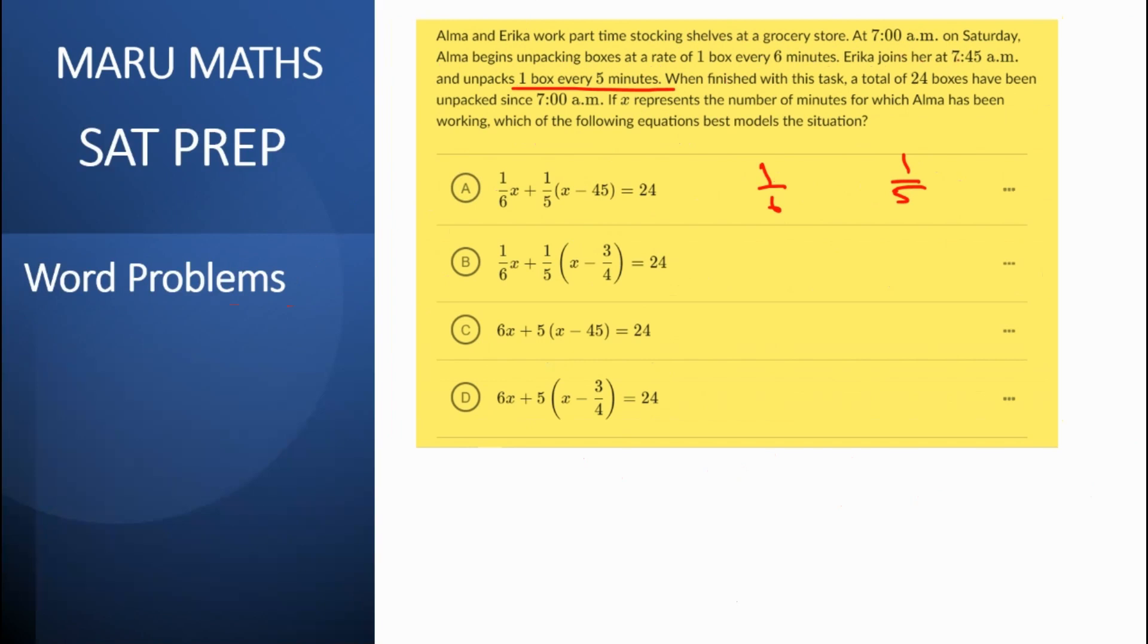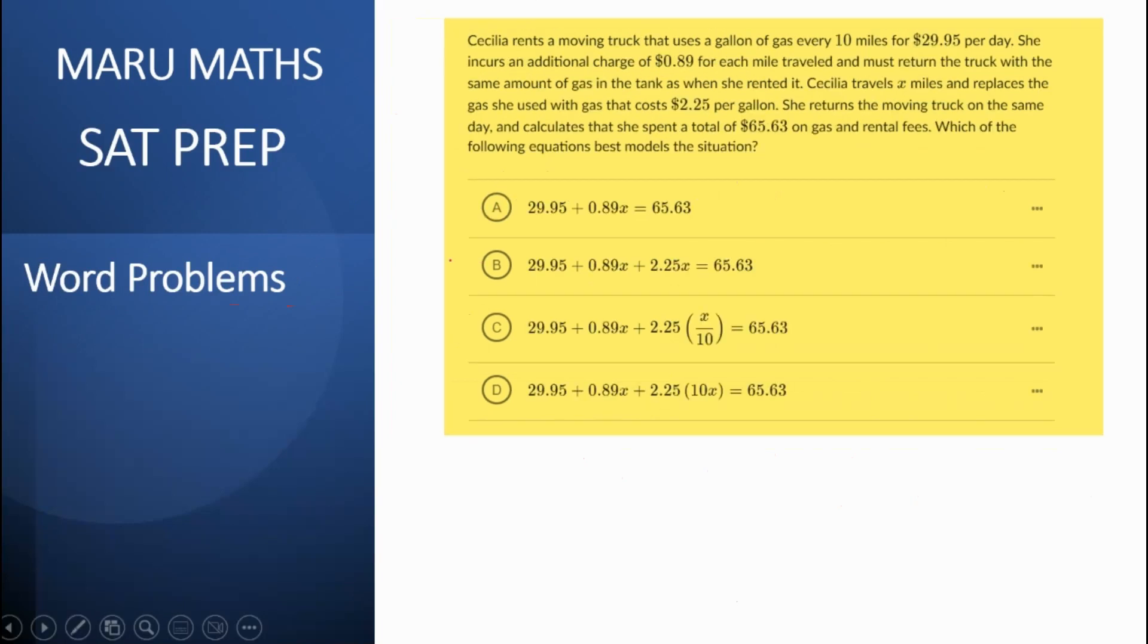Now they're saying that Erica starts 45 minutes later and totally they're unboxing 24 boxes. And x represents the number of minutes which Alma has been working on. So Alma has been working for x minutes. So x times one by six would be the number of boxes she has unpacked. And we know that Erica is joining 45 minutes later. So that would be x minus 45. And then the total number of boxes would be 24. The answer should be A. Let's move ahead to the next question.